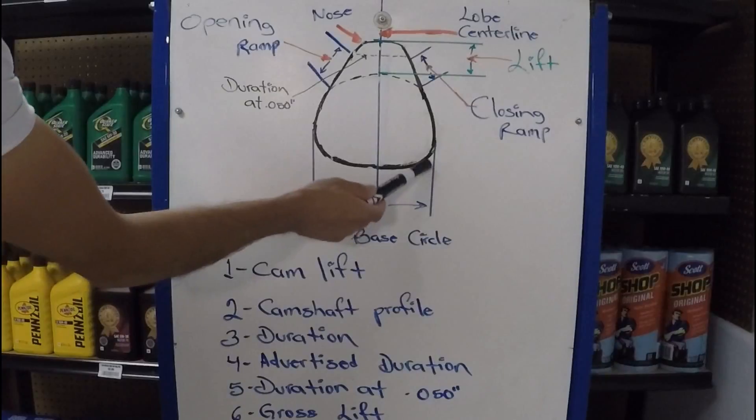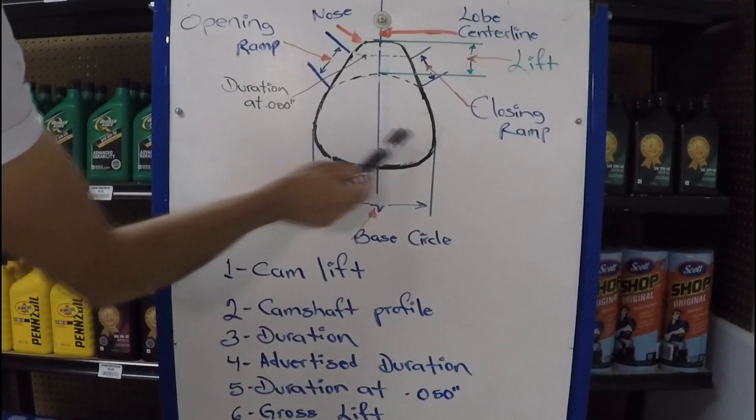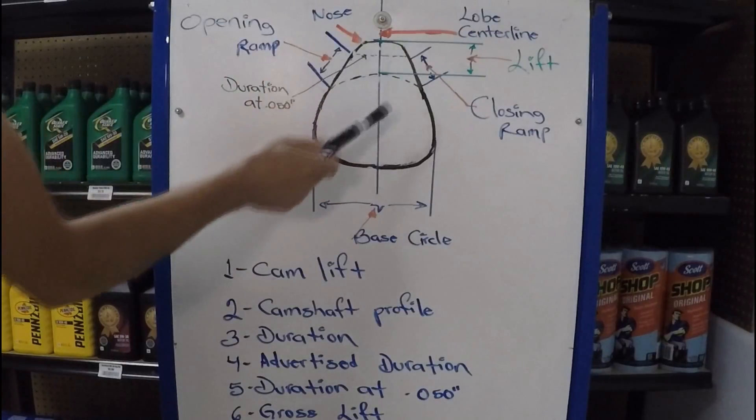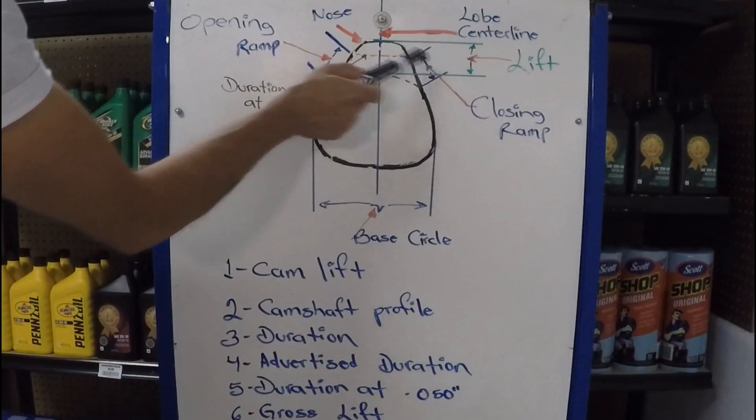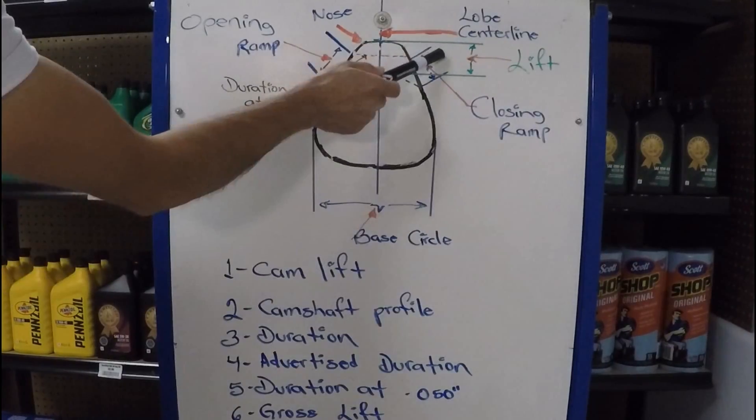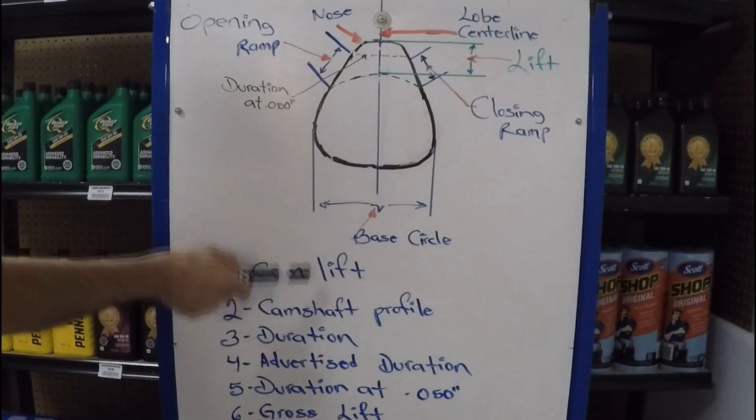Then you have the base circle, right? It's just the circle of the camshaft lobe. And now we're going to go over what this all means. And you have camshaft lift right there from the circle to the nose. That's your lift. So we're going to go over that first. Camshaft lift. What does that mean?